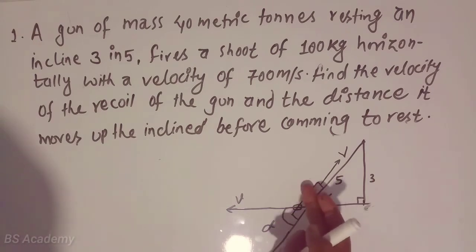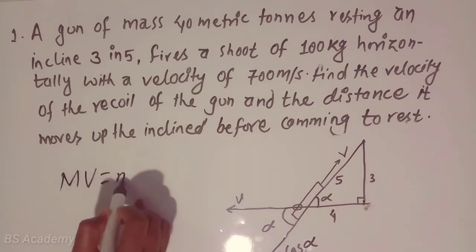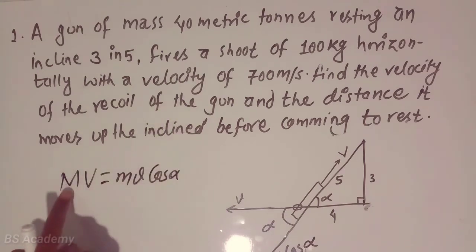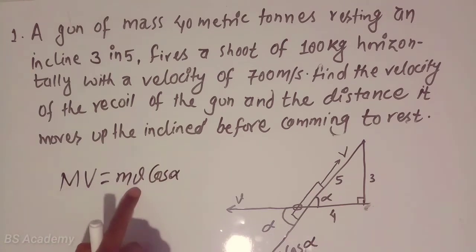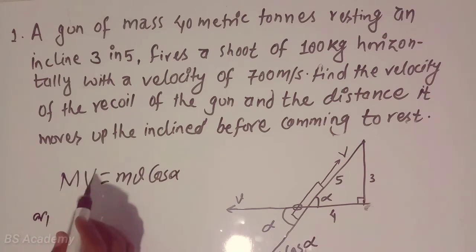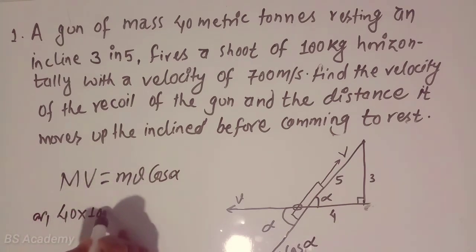From the principle of conservation of linear momentum, suppose mass of gun is represented by capital M: M V cos alpha. This is the mass of gun and velocity of gun. Mass of bullet, velocity of bullet. Mass of gun is 40,000 kg.